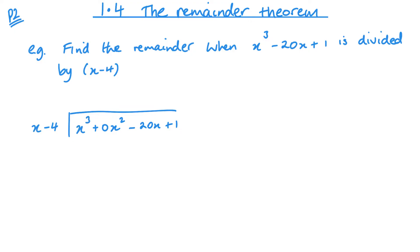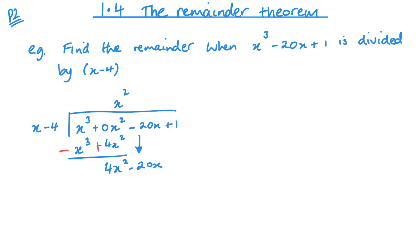x cubed divided by x gives me x squared. x squared times x is x cubed, and x squared times negative 4 gives negative 4x squared. Then I change my signs and add, which gives me zero x cubed and 4x squared. Bringing down negative 20x, then 4x squared divided by x is 4x. Multiplying through gives minus 16x, and changing signs and adding gives 4x squared minus 16x.